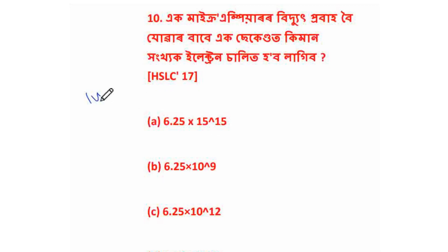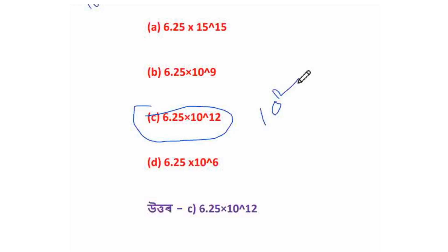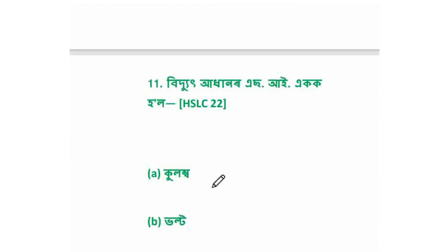1 micro ampere is equal to 10 power minus 6 ampere. So the answer will be 6.25 into 10 power 12. Writing it as a power: 10 power 12. So 6.25 into 10 power 12 is the result for the electric charge calculation.